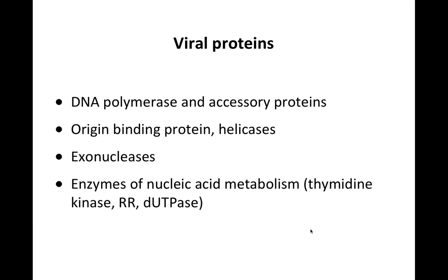Examples of viral proteins encoded in viral genomes that participate in DNA replication include: the DNA polymerase itself, accessory proteins, origin binding proteins, helicases to unwind double-stranded DNA — when you want to replicate a double-stranded DNA, you have to unwind it to separate the two strands, and the enzyme that does that is called a helicase — exonucleases that chew away the ends of DNA, and enzymes of nucleic acid metabolism involved in synthesis of the triphosphate precursors.